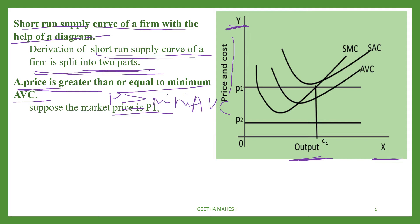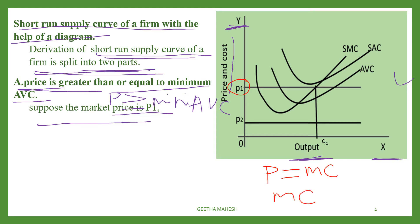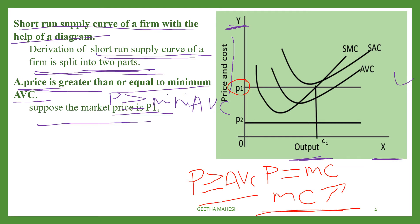Suppose the market price is P1. In that situation, we have to consider all three conditions of the profit-maximizing condition of a firm. First, price must be equal to MC. Second, MC must be non-decreasing at Q0 — that means MC must be increasing. Third, price must be greater than or equal to minimum of AVC.